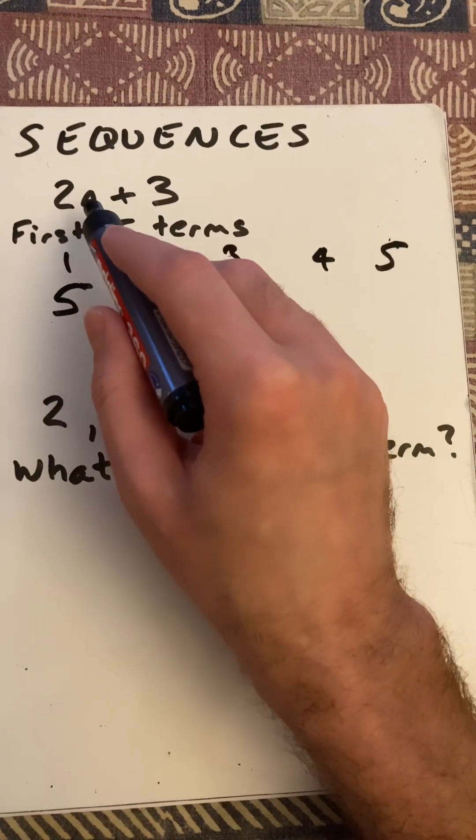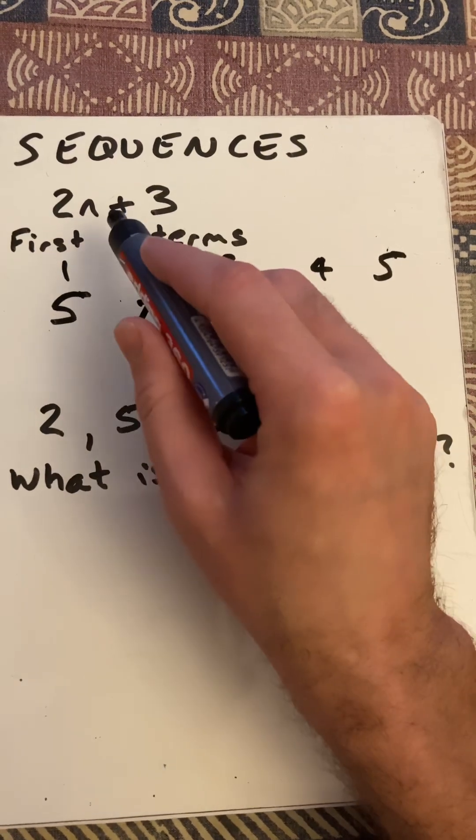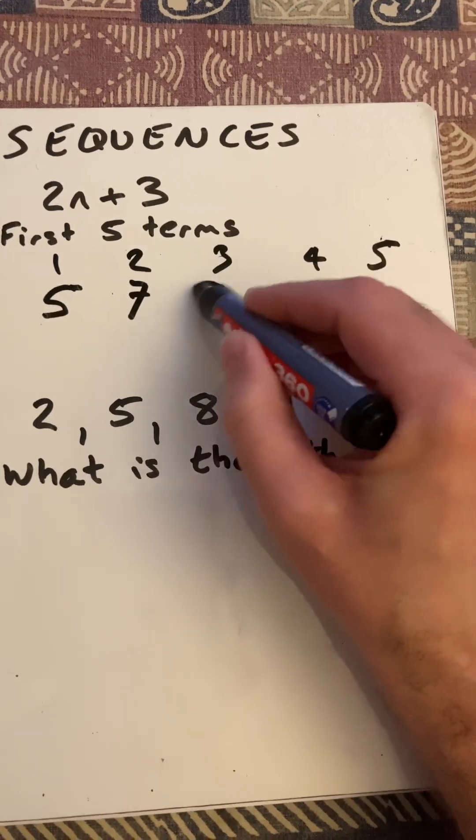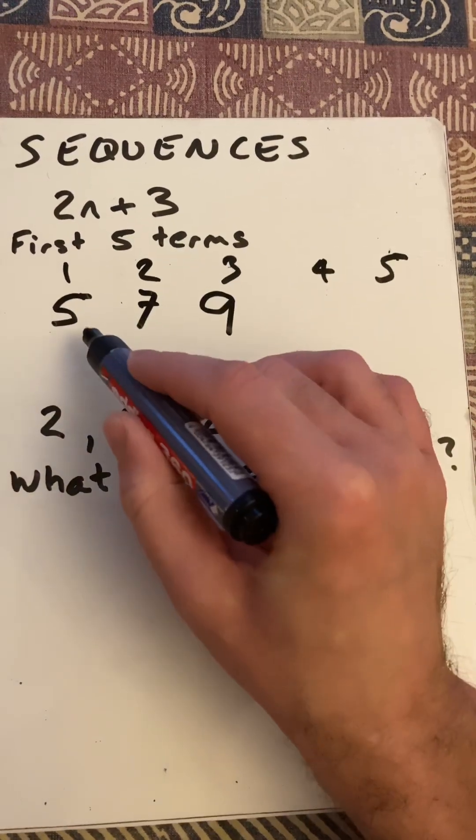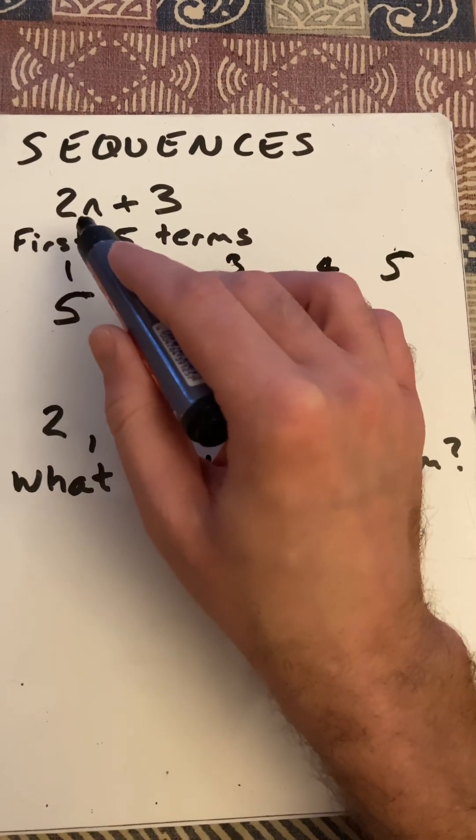2 times 2, which is 4, plus 3 is 7. 3 times 2 is 6, plus 3 is 9. And you can see we're going up by 2 each time. That's why there's 2 as the coefficient there.